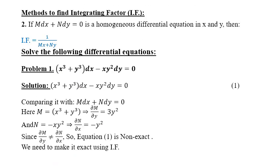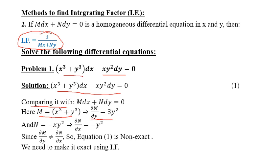Now the second method: if M dx + N dy = 0 is a homogeneous differential equation in x and y, then the integrating factor is always 1/(Mx + Ny). For example, (x³ + y³)dx − xy² dy = 0. Since the structure x dy − y dx is not present, we cannot use inspection. We check: M = x³ + y³, ∂M/∂y = 3y²; N = −xy², ∂N/∂x = −y². Since ∂M/∂y ≠ ∂N/∂x, the equation is not exact.